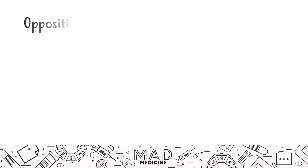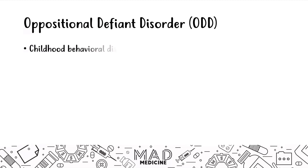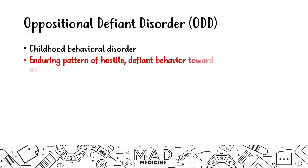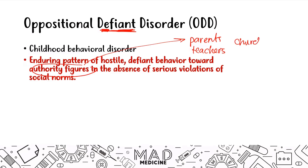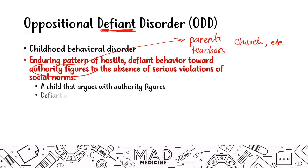Let's talk about the next childhood behavioral disorder: oppositional defiant disorder. In ODD, you're going to have an enduring pattern of hostility and defiant behavior towards authority figures in the absence of serious violations. The main hallmark of ODD is going to be defiance. They're going to be defiant to authority figures — these could be parents, teachers, or people from their church or religious organization. A child might argue with the authority figure, and may be defiant and vindictive towards parents and teachers just to get back at them.